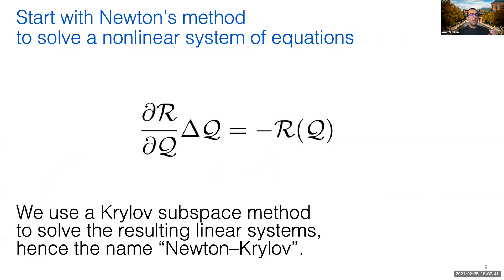I'll do a high-level overview of the solver itself. For the ANK solver, we start with Newton's method to solve a system of nonlinear equations. Here Q represents the states and R represents the residuals of the governing equations. In this context, we want to converge the residuals to zero to obtain a steady-state solution. To do this, we use Newton's method where the update to the state, delta Q, is formulated using this equation. This is a linear system, and the partial R partial Q term that appears on the left-hand side is called the Jacobian. To obtain the update to the states, we need to solve this linear system and we use a Krylov subspace method for this. As a result, this type of solver algorithm is called Newton-Krylov.